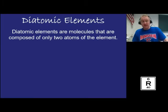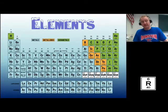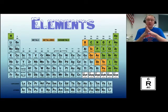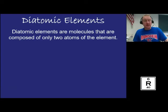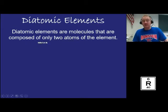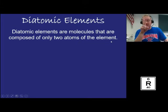On the periodic table, you have all these elements, but some of them, when you find them in pure elemental form, will never be alone — they're always going to be paired. These paired ones we call the diatomic elements. Diatomic elements are molecules composed of only two atoms of the same element. Those are your diatomics.